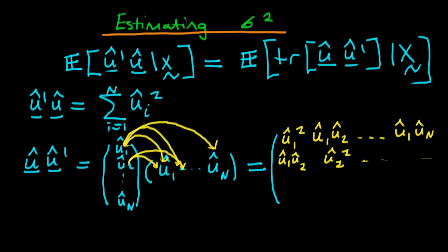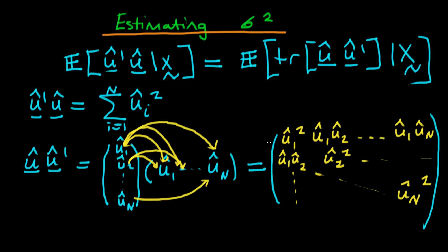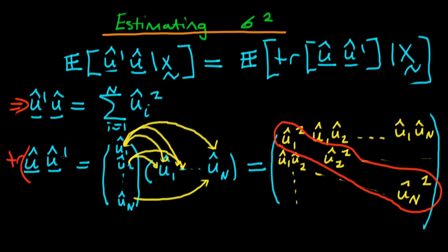We can continue filling out the entries that way, both across and down the columns. Our last entry is just going to be û_n times û_n, so that's just û_n all squared. The trace of this particular matrix is just going to be these square terms found on the diagonal, because the trace is just summing together all the diagonal elements. So the trace equals the sum from i equals 1 to n of û_i all squared.